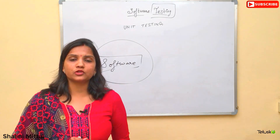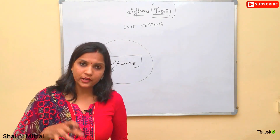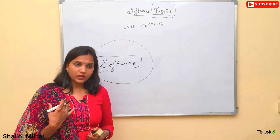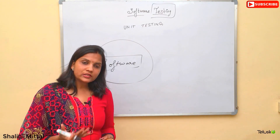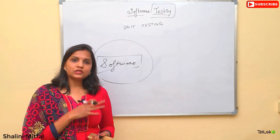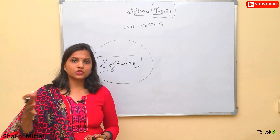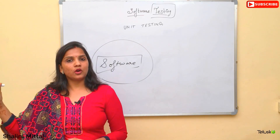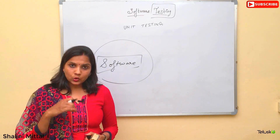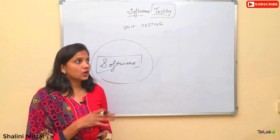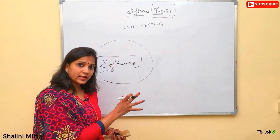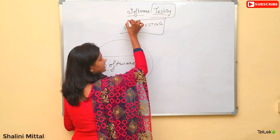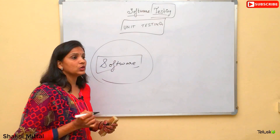When I talk about the software development life cycle and the phases of software development, it starts with requirements gathering, then design, then implementation, then the testing part, quality assurance, and so on. Today I won't focus on the whole life cycle, but I will focus on one part of software testing — that is unit testing.